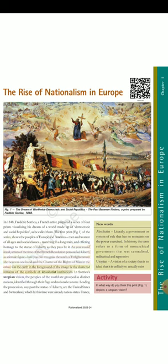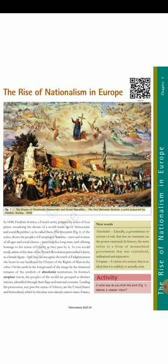On the earth in the foreground of the image lie the shattered remains of the symbols of absolutist institutions. In Saurieux's utopian vision, the peoples of the world are grouped as distinct nations, identified through their flags and national costume. Leading the procession way past the Statue of Liberty are the United States and Switzerland, which by this time were already nation states. Fig. 1: The dream of worldwide democratic and social republics, the pact between nations — a print prepared by Frédéric Saurieux, 1848.